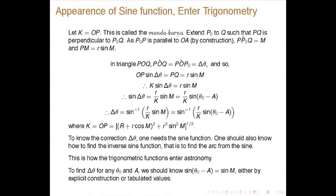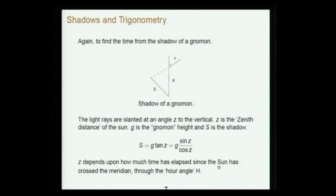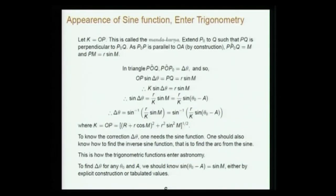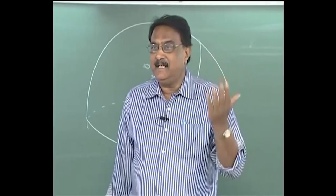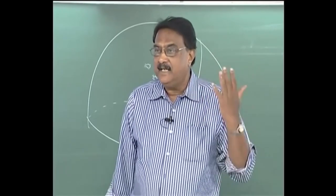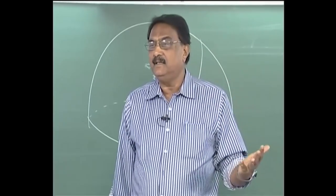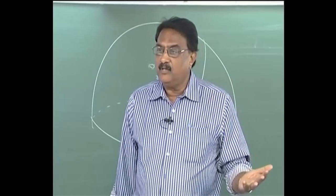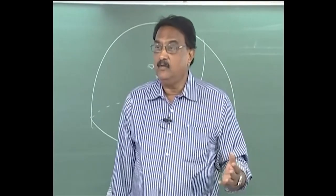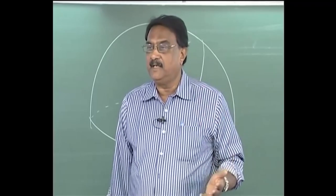Thus, to find delta-theta for any theta₀ and A, we need to know sin(theta₀ − A) either by explicit construction or tabulated values. This is how the trigonometric function enters astronomy. Many important developments in mathematics in earlier days are intimately associated with developments in astronomy — non-uniform motion requires trigonometry to be developed.